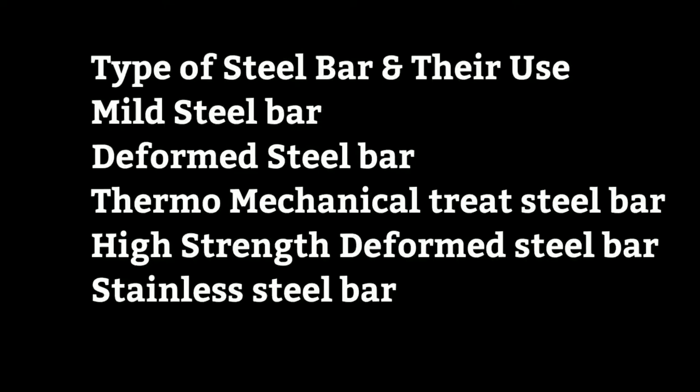Hello friends, today we will talk about the types of steel bars and their use. Mild steel bars are used for the tension side of RCC slabs. In RCC work, these steel bars are plain in surface and are round in section, with diameter from 6 to 50 mm, and can be cut quickly and bent easily without damage.